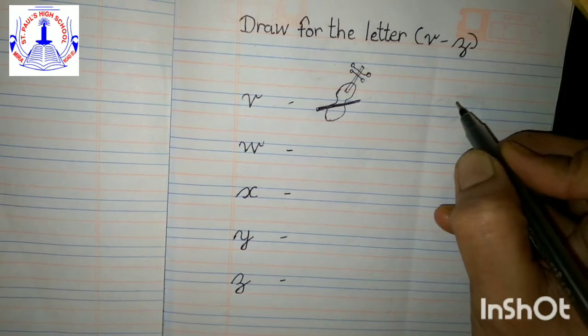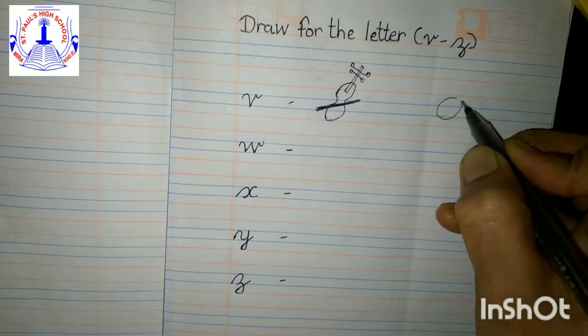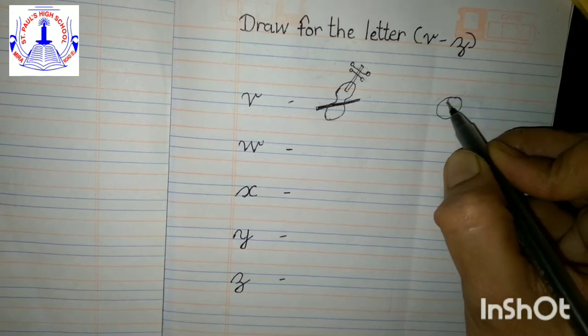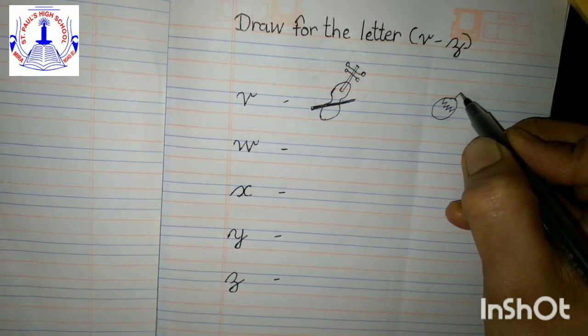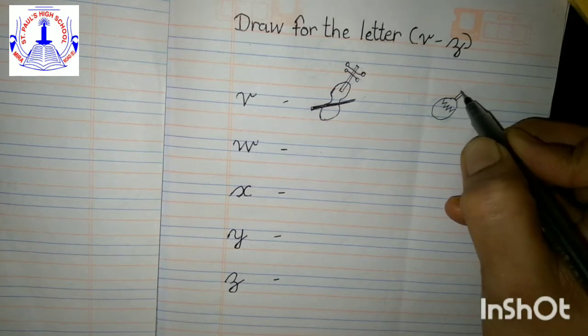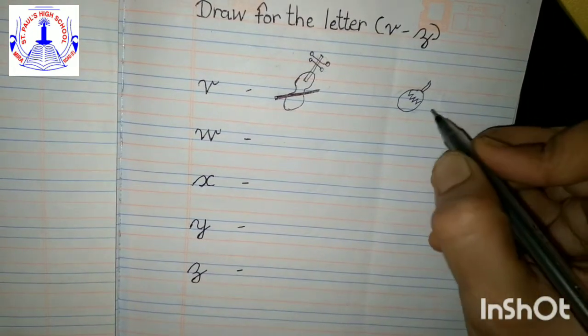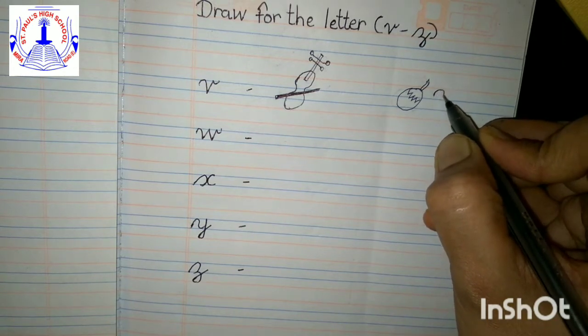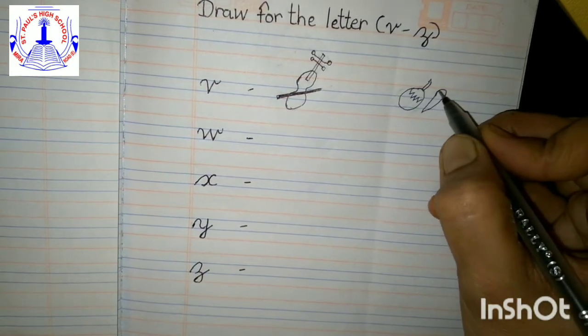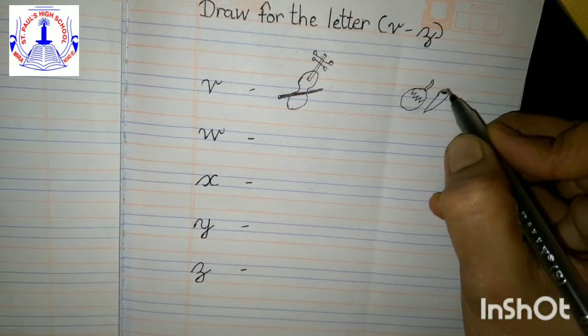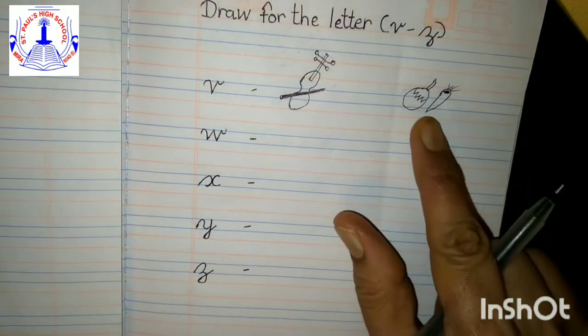Now second object. We are going to make vegetables. V for vegetables. So, first of all we are going to make a brinjal, king of the vegetables. Very simple way to make. Now, we are going to make a carrot. Make one cone shape like this. And then up make a root. Okay. So, V for violin and V for vegetables.